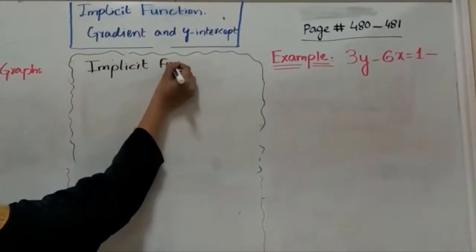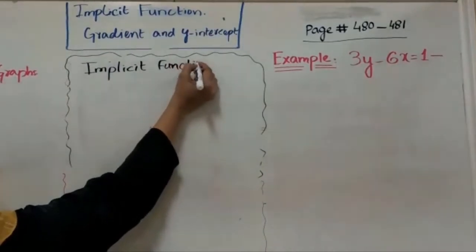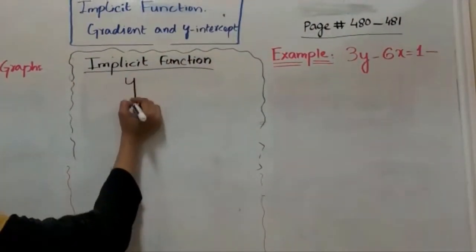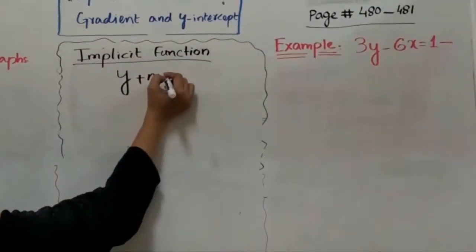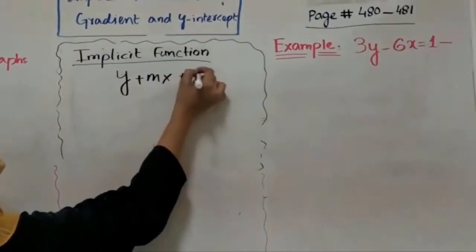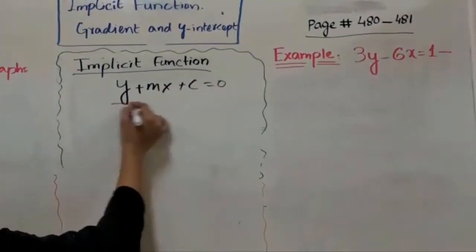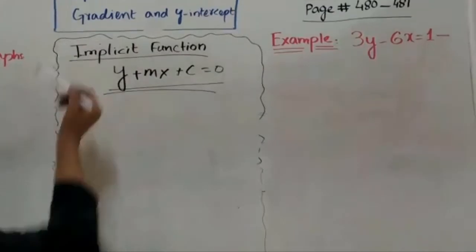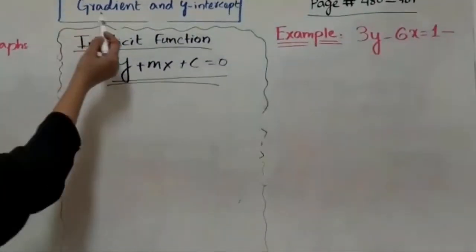It's written like this: y plus mx plus c equal to 0, for example. So this type of equation or this type of function are in the form of implicit. For finding the gradient and y-intercept, what you have to do?